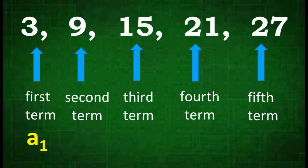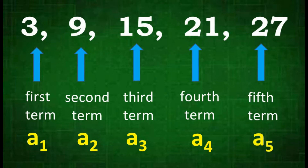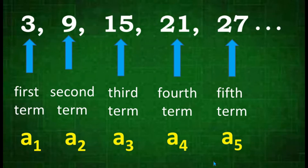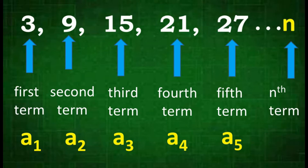In symbol, we can write the first term as a sub 1, second term a sub 2, third term a sub 3, fourth term a sub 4, fifth term a sub 5. If we continue the sequence, we will have our nth term, written as a sub n. Take note that n here refers to the term position, such as 1st term, 4th term, 5th term, 6th term, 10th term, and so on.